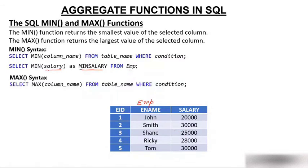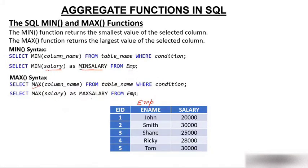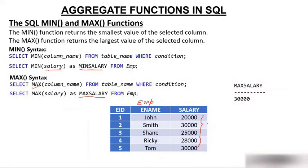Let's move to maximum salary. The syntax is the same — only in place of MIN you put MAX. Everything else is the same. The syntax is: SELECT MAX(salary) AS max_salary FROM imp. You will get max_salary, and the maximum salary in the given table is 30,000.